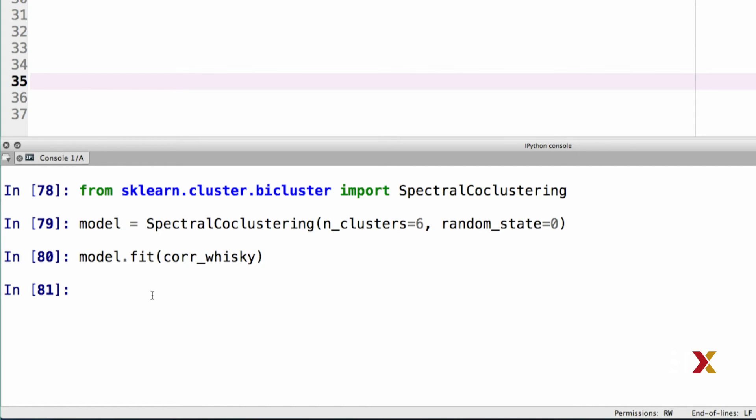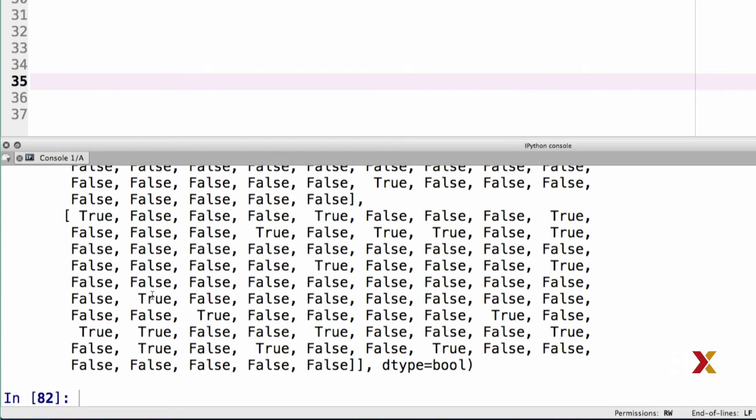Let's then look at the clusters that we have just uncovered. The output is an array with the following dimensions: number of row clusters times number of rows in the data matrix, the correlation matrix in this case. The entries of the array are either true or false. Each row in this array identifies a cluster, here ranging from zero to five. And each column identifies a row in the correlation matrix, here ranging from zero to 85.